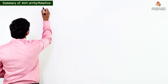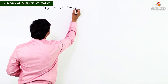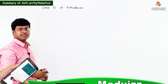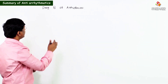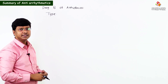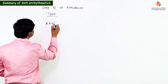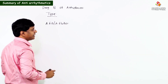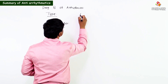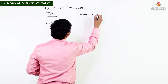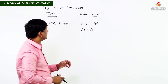Let me summarize the drug of choice for the acute and chronic therapy of various arrhythmias. For atrial fibrillation or atrial flutter, the drug of choice for acute therapy is propranolol and esmolol.